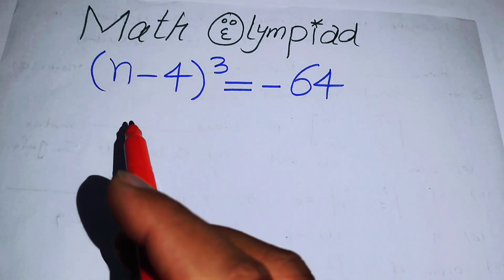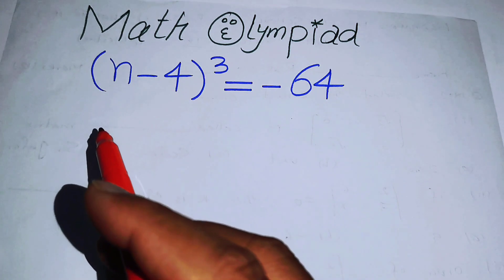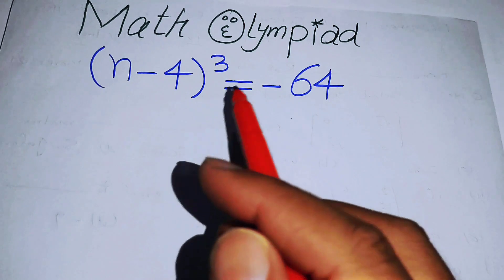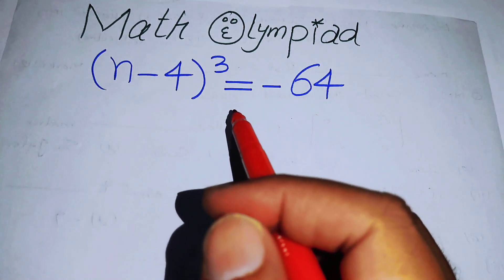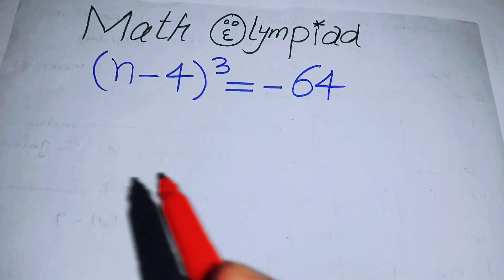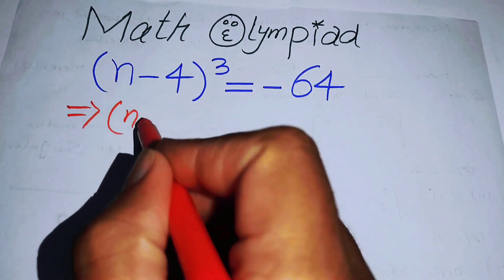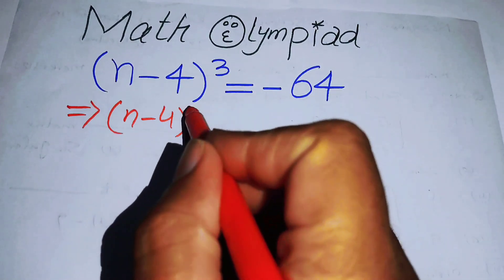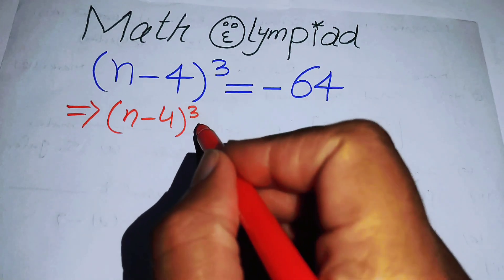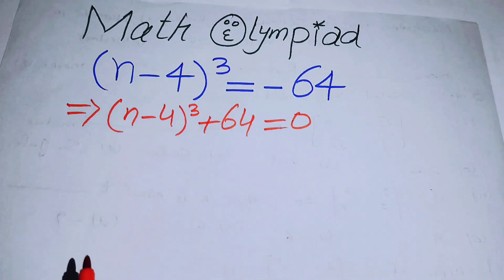Hello everyone, welcome back to the Map of Mathematics. In this video we are going to solve this nice algebra problem: (n - 4)³ = -64. We will solve this problem for the values of n. The first thing we are going to do is rewrite this equation by moving -64 to the left-hand side, giving us (n - 4)³ + 64 = 0.